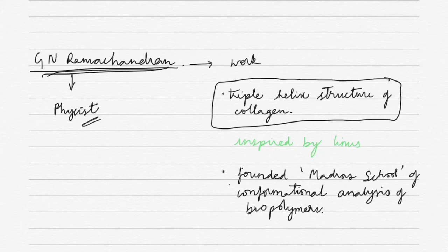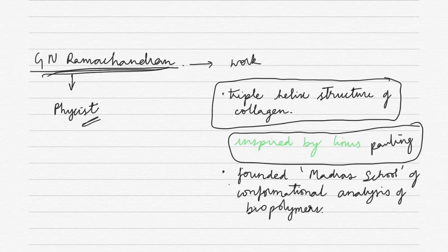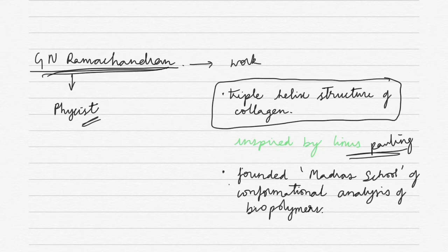Basically there was a scientist called Linus Pauling. So there was a scientist called Linus Pauling and he started working on alpha and beta sheet structure of the proteins. This was his work and G.N. Ramachandran met Linus Pauling and then he got inspired and he started working on the triple helix structure of collagen.